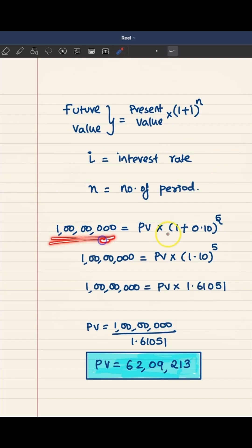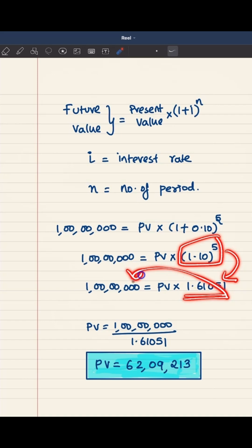Future value is 1 crore. Present value we are trying to find out, multiplied by (1 + interest rate 10%). 10 by 100 will be written as 0.1, to the power 5. So 1 crore equals present value times 1.1 to the power 5. And this 1.1 to the power 5 will give you 1.61051. Take it to the right-hand side in the denominator, and if you calculate, you will get 62,09,213.